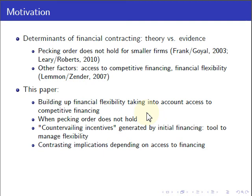Thereby we show when the pecking order theory holds and when it fails to hold. What we really want to focus on in this paper is on the countervailing incentives generated by the initial capital structure — countervailing because they will be contrary to those typically analyzed in the financial contracting literature. I will argue that the initial capital structure, through the countervailing incentives it generates, gives management a very powerful tool to manage financial flexibility.